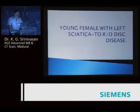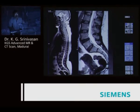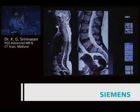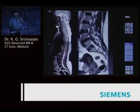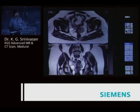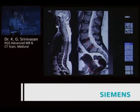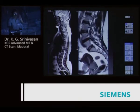Young female with left sciatica to rule out disc disease. Whenever doing whole spine, you should also evaluate the pre-sacral region. The disc and parasagittal foraminal sections look normal — but carefully look at the cervix. You can see the cervix is showing a mass extending into the parasagittal region, with parametrial infiltrations responsible for the sciatica.